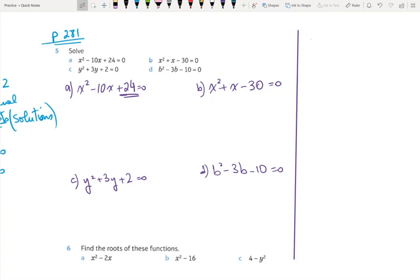Let us apply our concept. So on page 281, we do exercise number 5, and we look at part A: x squared minus 10x plus 24 is 0. These are three terms.